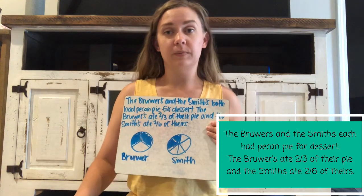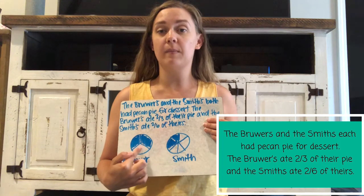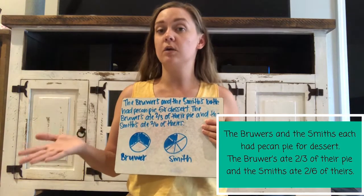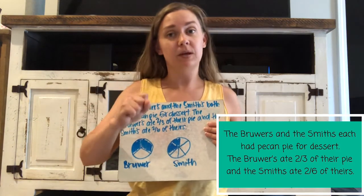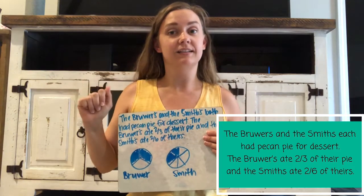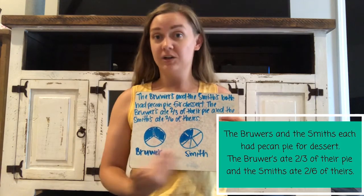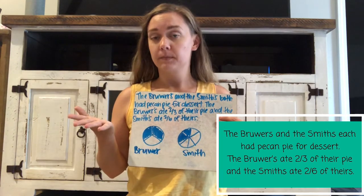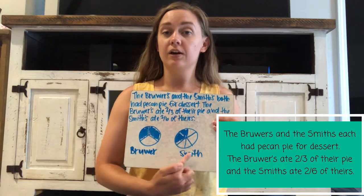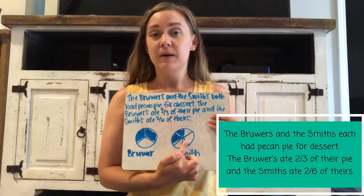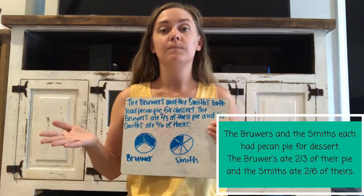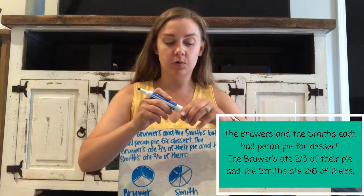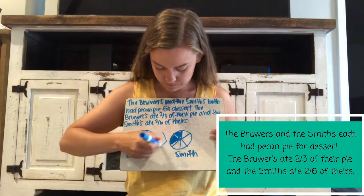Maybe the Brewers only have three people in their family. Both pies are the same size. If I'm going to split my pie with three people versus six people, the less people I share with, the bigger the pieces get. So if I'm only sharing with three people and I get two pieces, I'd much rather have those two pieces — they're a lot bigger. Over here I still get two pieces, but they're a lot smaller because I'm sharing with more people. So the Brewers definitely ate more than the Smiths.